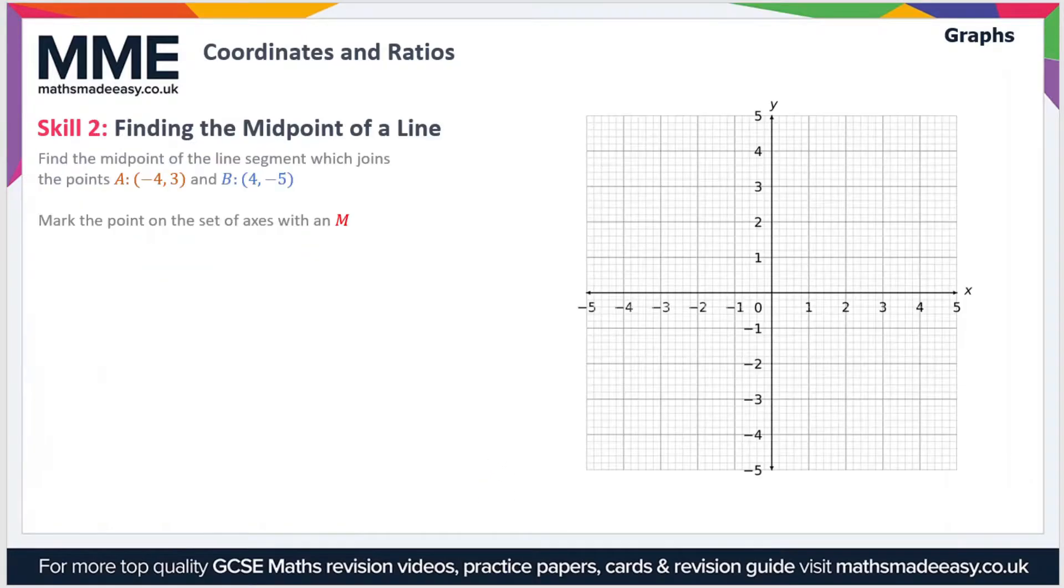Moving on then, if we look at the next skill which is finding the midpoint of a line. In this example we have to find the midpoint of the line segment which joins point A, which is (-4, 3), and B, which is (4, -5), and then mark the point on the set of axes with an M.